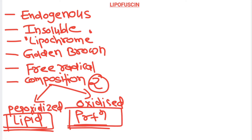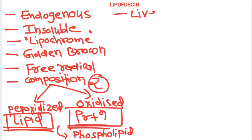There is also presence of phospholipid in the lipofuscin pigment, so that is the composition. Now, this particular pigment usually gets deposited in two organs — one is the liver and another one is the heart.